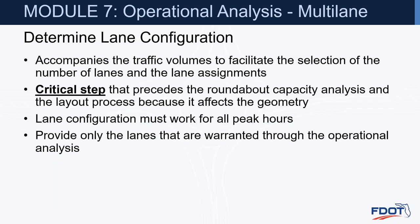When we determine our lane configuration, it accompanies the traffic volumes to facilitate selection of the number of lanes and lane assignment. This is a critical step that precedes the roundabout capacity analysis and the geometric layout process, because whatever we determine here affects the geometry. Lane configuration must work for all peak hours — AM may control in one direction and PM in another, and special events may need to be accommodated as well. We want to make sure we're only providing lanes that are warranted through the operational analysis.